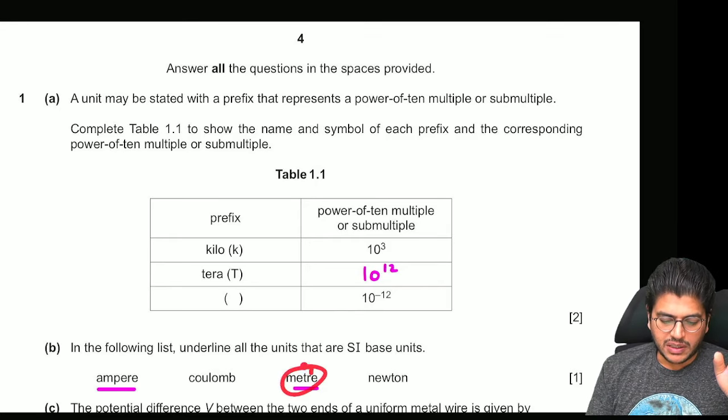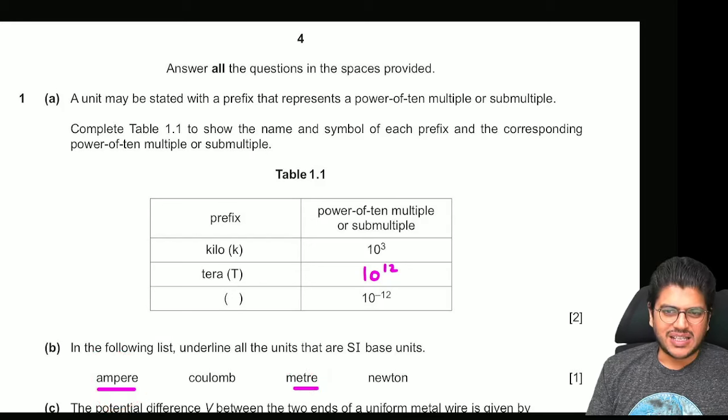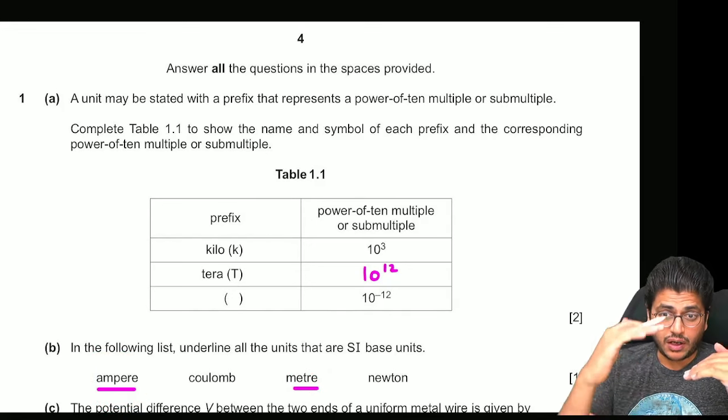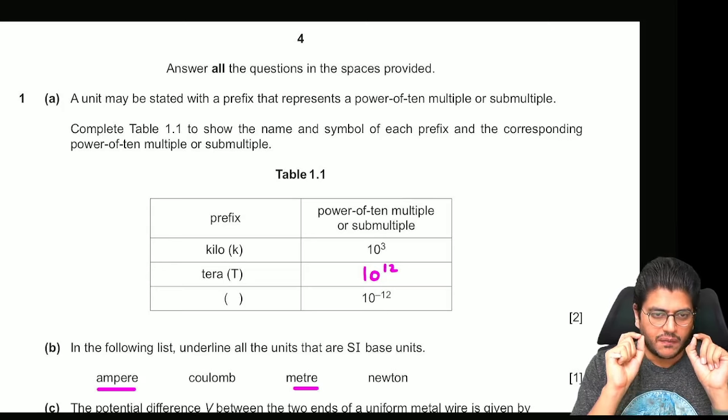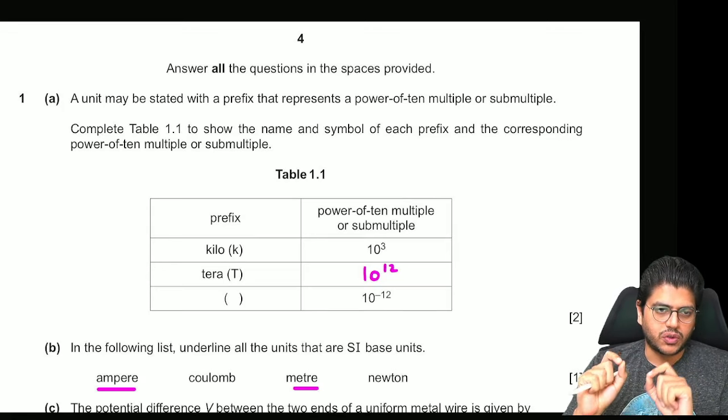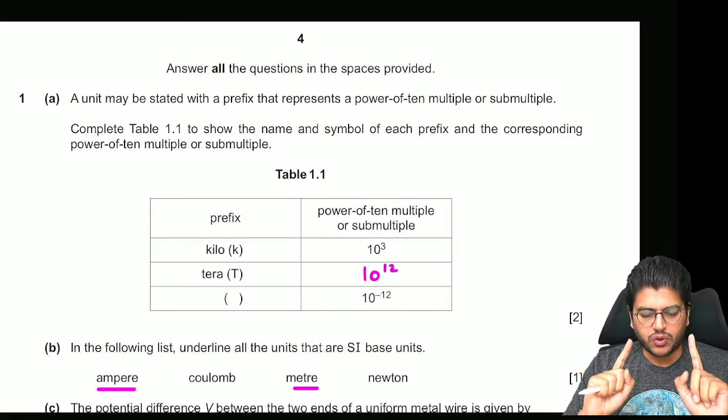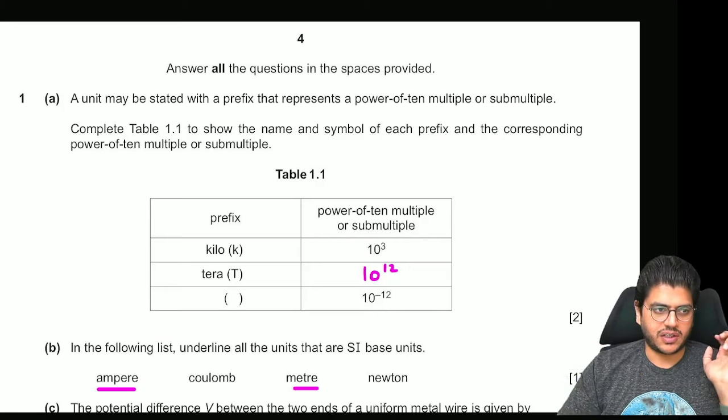Units are meter, ampere, seconds and you have that list of seven quantities. Remember that there's a difference between quantities and units. Here they're asking for units not for the quantities. So if they ask you for quantities the quantities could be mass, length, time etc.